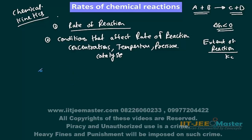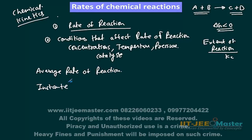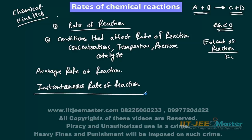Rate of reaction we measure in two ways, just as we measure velocity. Instantaneous velocity and average velocity. So the rate of reaction is also measured in two ways — average rate of reaction and instantaneous rate of reaction. Our ultimate aim is to have a relation of concentration with respect to time. We want a relation in terms of concentration with respect to time, and it will be better if we get concentration with respect to time.